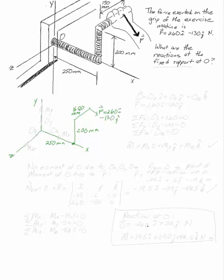At O, I'm told that this is a fixed support. So I'm going to have OZ in the Z direction, OY in the Y direction, and OX in X direction. I'm also going to have moments along these axes. So I'll have MZ, I'll have MX, and I'll have MY.